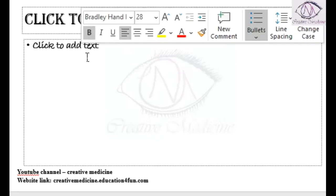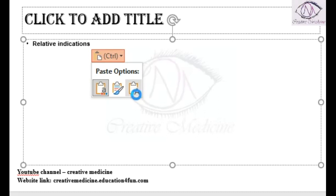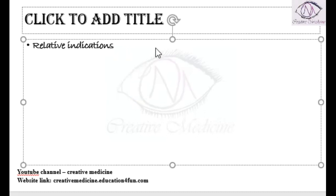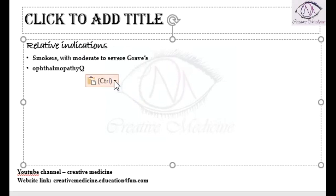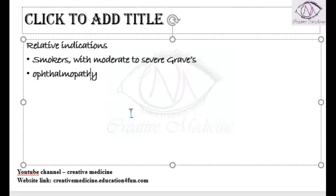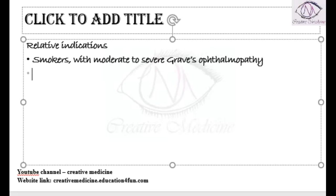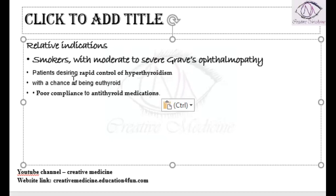We also have relative indications of surgery. Surgery is relatively indicated especially in smokers with mild to moderate or severe Graves disease, because in Graves ophthalmopathy, radioactive iodine therapy can cause progression of the disease. So if a smoker has severe or moderate Graves ophthalmopathy, it is better to perform surgery.